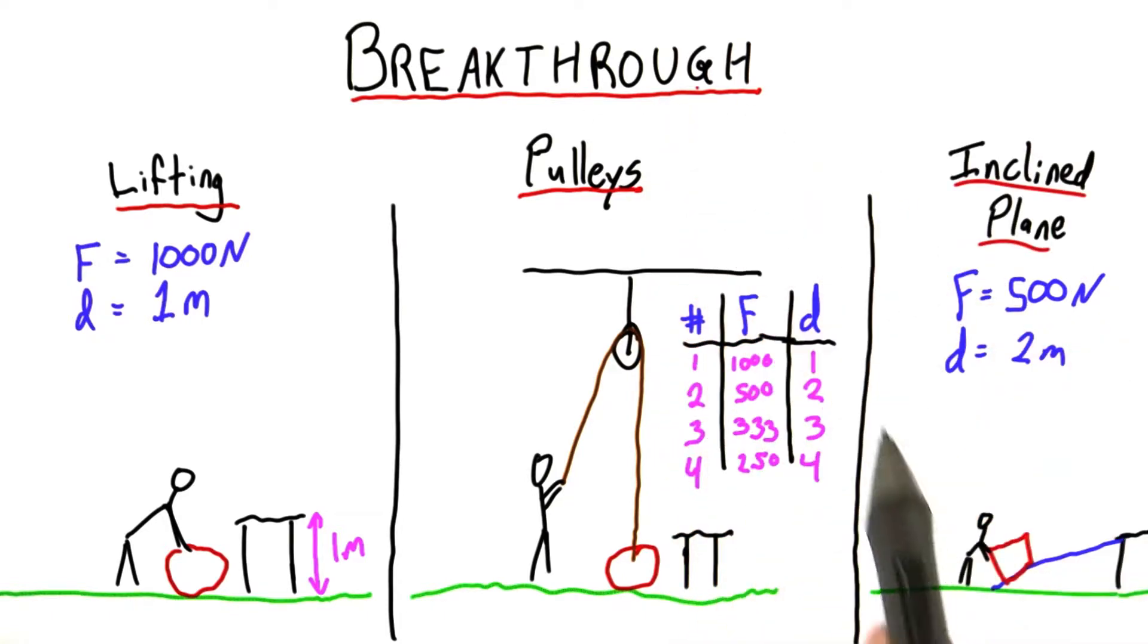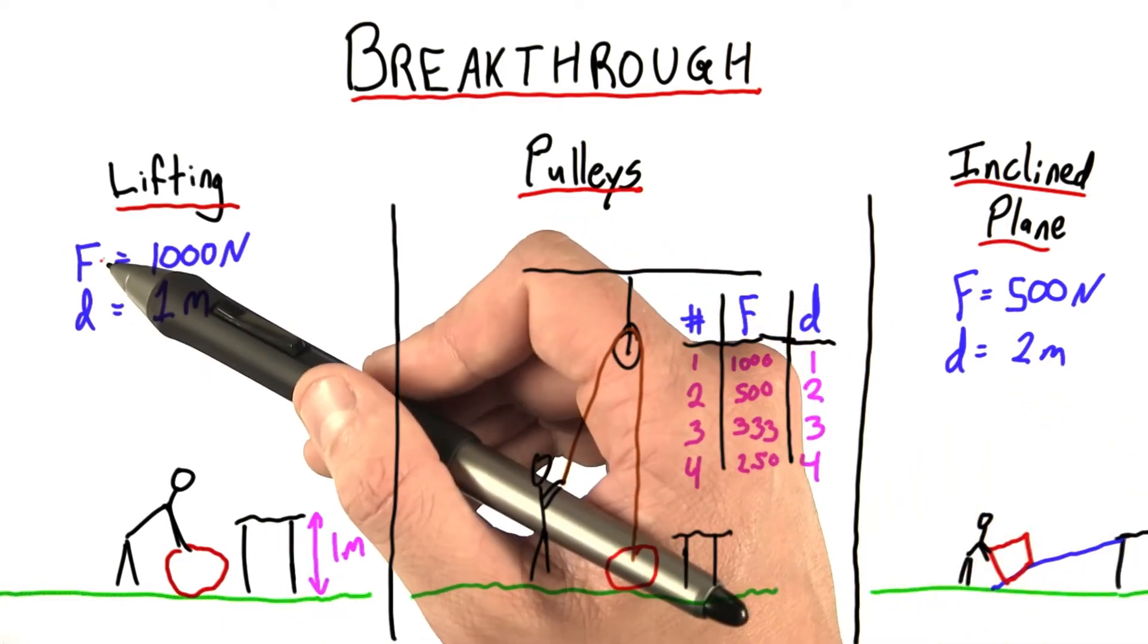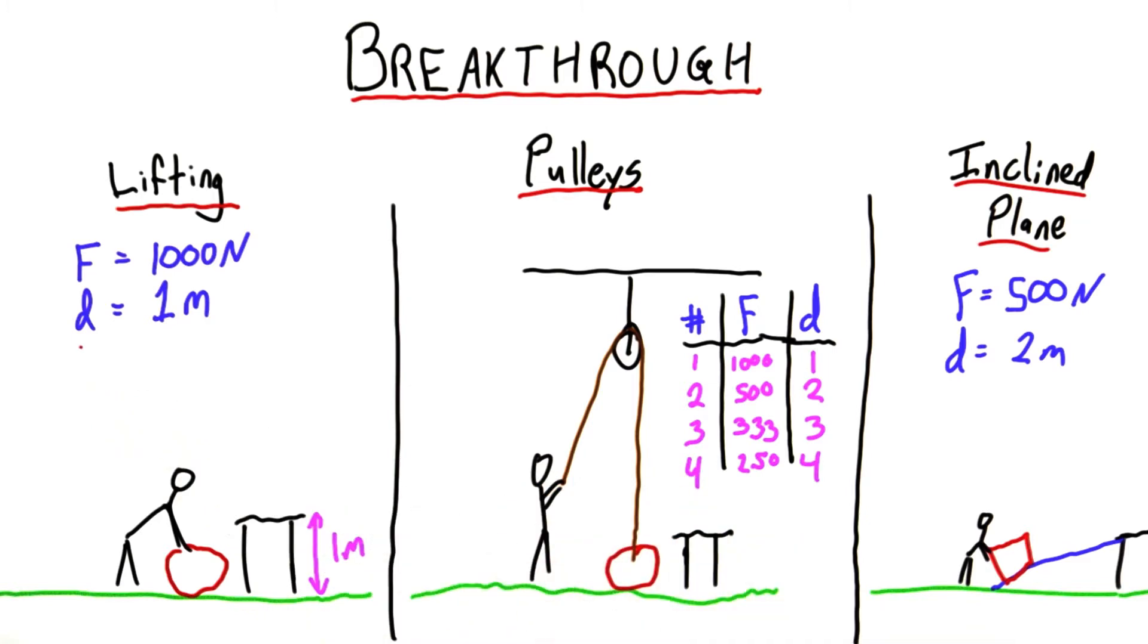And now it's time for the breakthrough. For all of these seemingly entirely different ways of moving this block up by a height of 1 meter, something is constant. The force times the distance is always equal to 1,000.